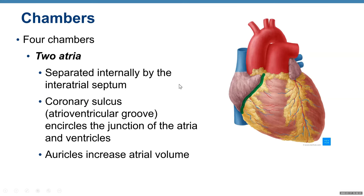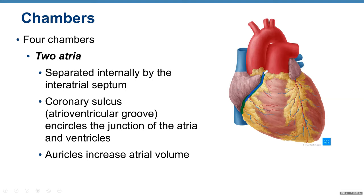The heart has four chambers. Two atria are separated internally by the interatrial septum. Looking at the heart surface, here are the atria, here are the ventricles, and you can see the separation between atria and ventricles — shown here in green — the coronary sulcus or atrioventricular groove, which encircles the junction of the atria and ventricles. On the atrium, we have auricles, which increase atrial volume.